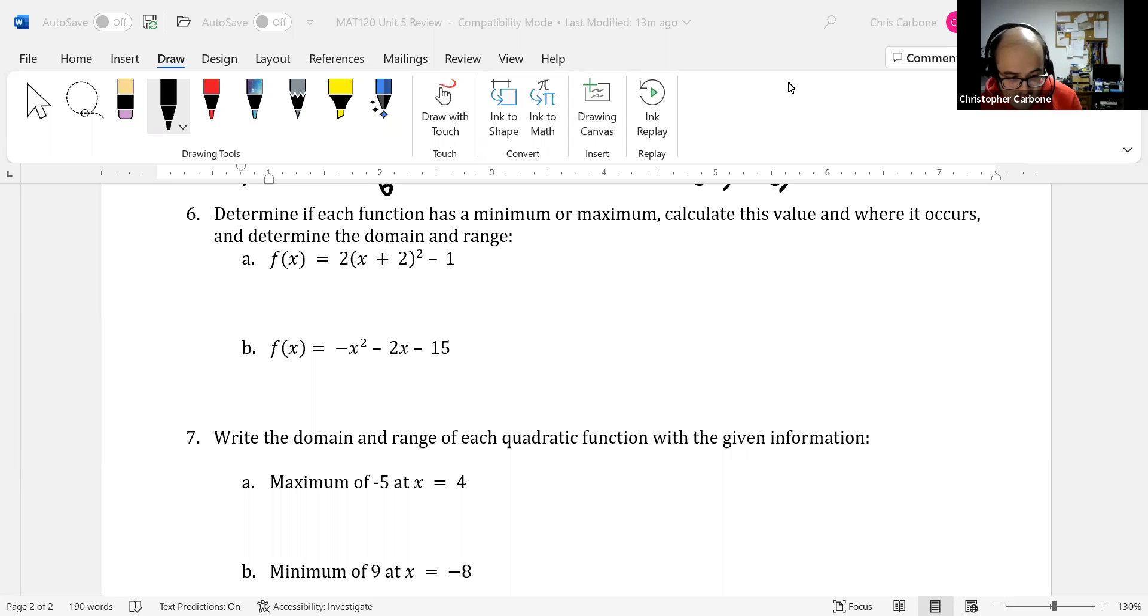For f(x) = 2(x + 2)² - 1, this first term of 2 is positive. So because that's positive, this is going to be a minimum.